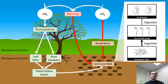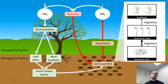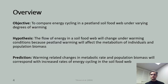Warming is associated with changes in metabolism in our soil communities, like that represented by our simple food chain on the right of this slide. These changes in metabolism are associated with increased rates of respiration and subsequently decreased rates of carbon sequestration. Thus, warming may drive a change in soils from a carbon sink to a carbon source. I sought to compare energy cycling in a peatland soil food web under varying degrees of warming to further our understanding of how warming affects soil carbon sequestration.